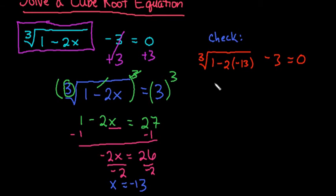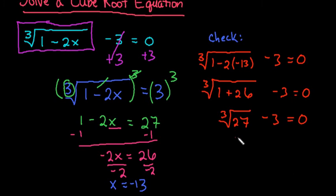Simplifying, we get the cube root of 1 minus 2 times negative 13. Negative times negative gives us plus 26, so 1 plus 26 equals 27. The cube root of 27 is 3, and 3 minus 3 equals 0.